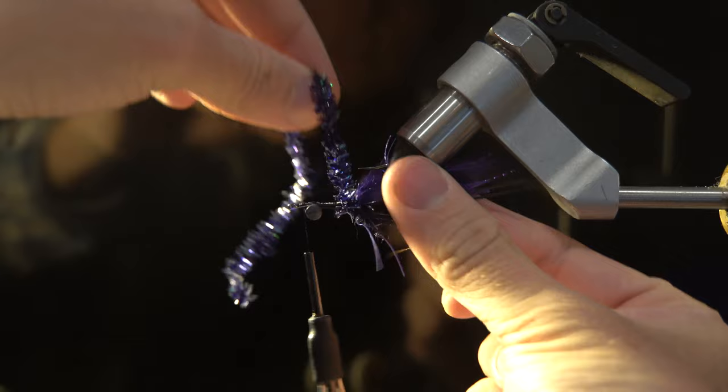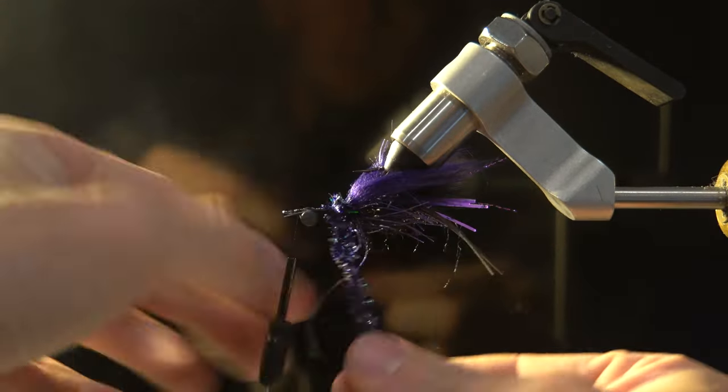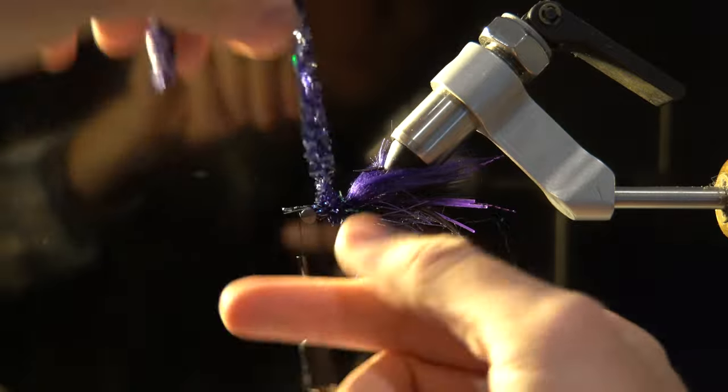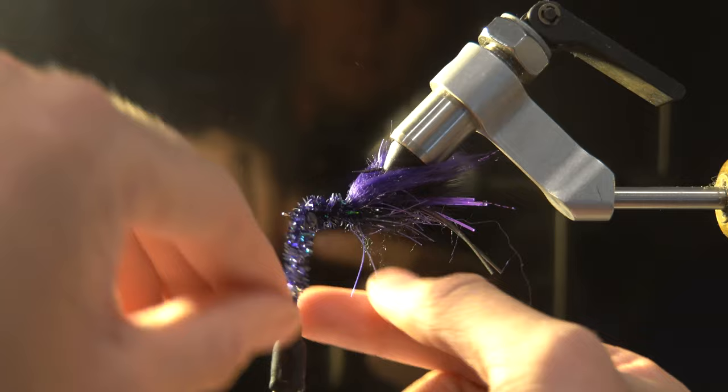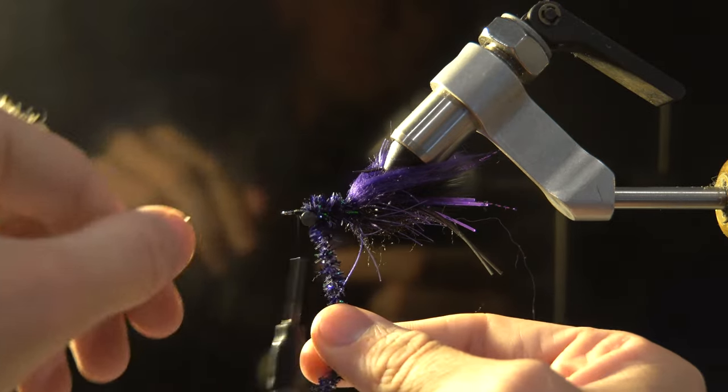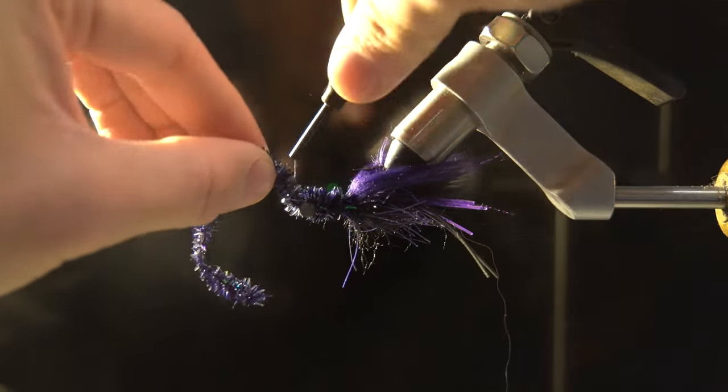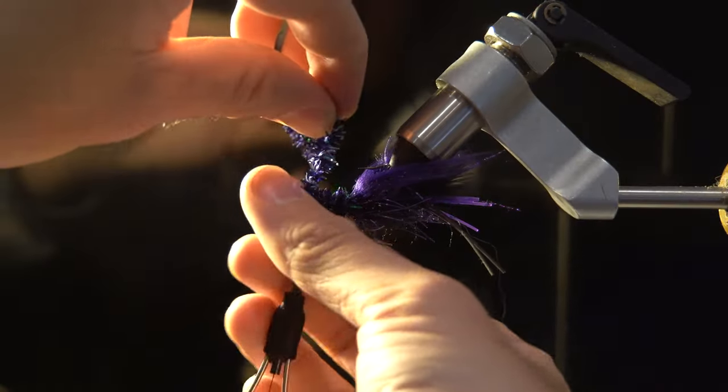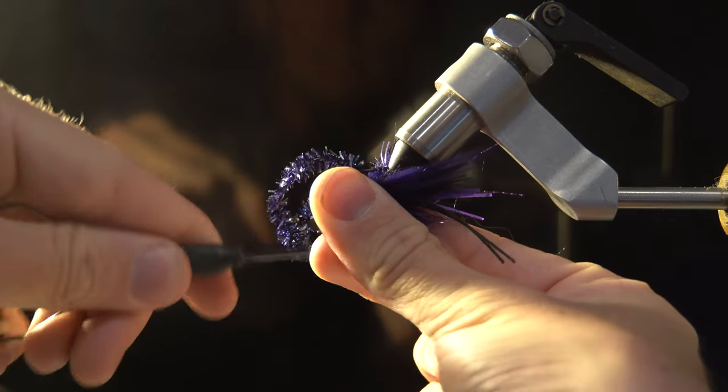Finally, stroking everything back one more time while we do our tight wraps forward to create the body of this shrimp fly. I will be taking it just in front with one wrap in front of the dumbbell eyes and lock it down and tie it off.